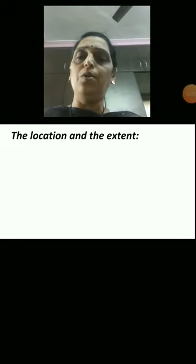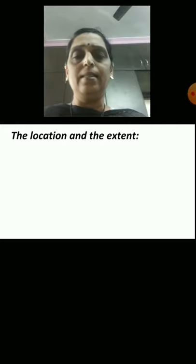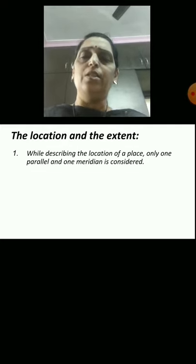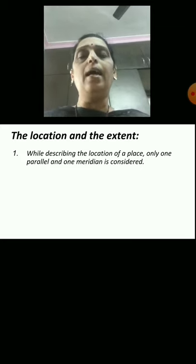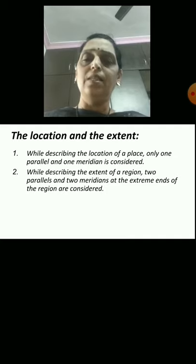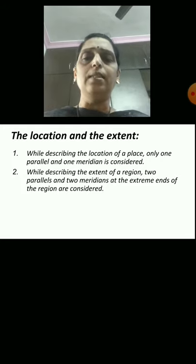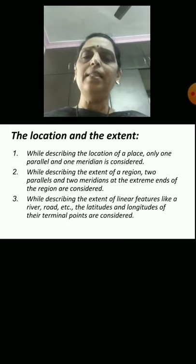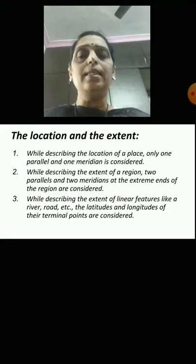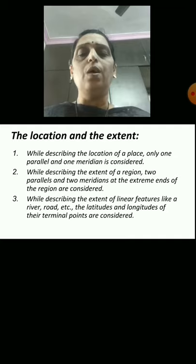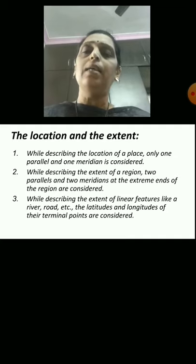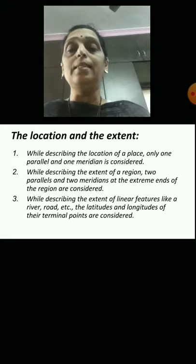The next topic you had studied was location and extent. While describing the location of a place, only one parallel and one meridian is considered. While describing the extent of a region, two parallels and two meridians at the extreme ends of the region are considered. While describing the extent of linear features like a river, road, etc., the latitude and longitude of their terminal points — meaning end points — are considered.